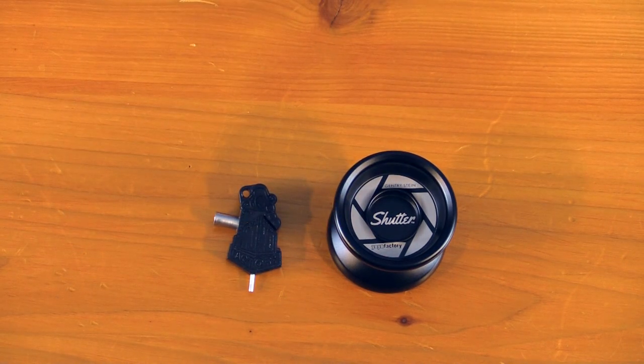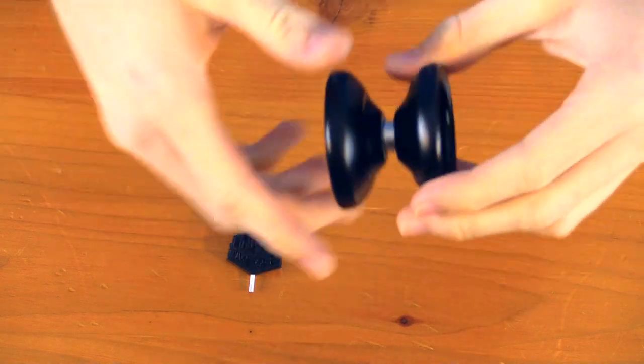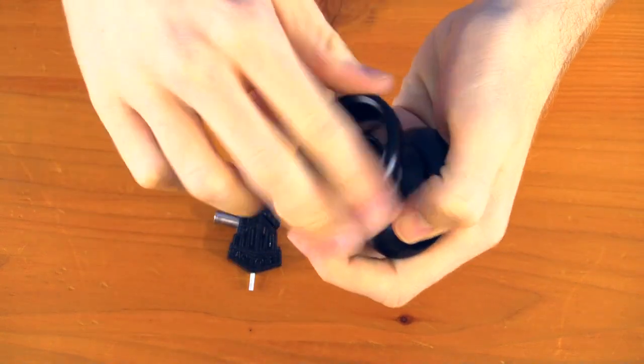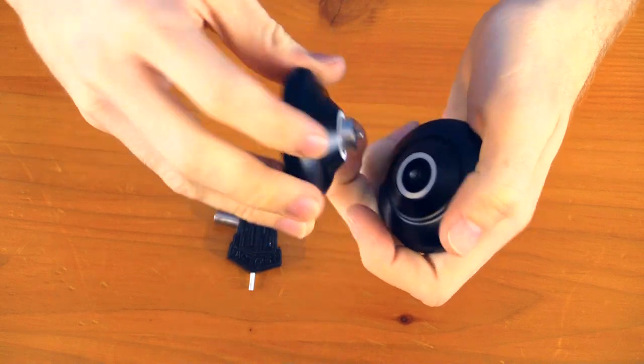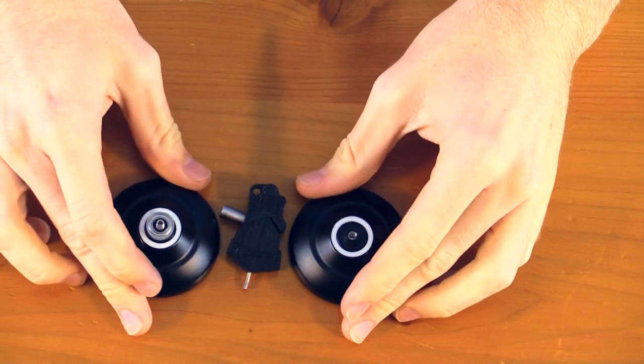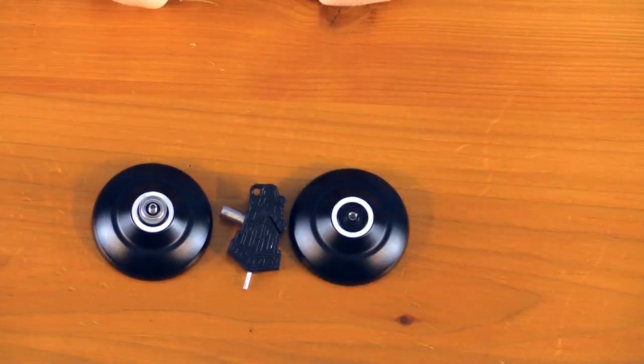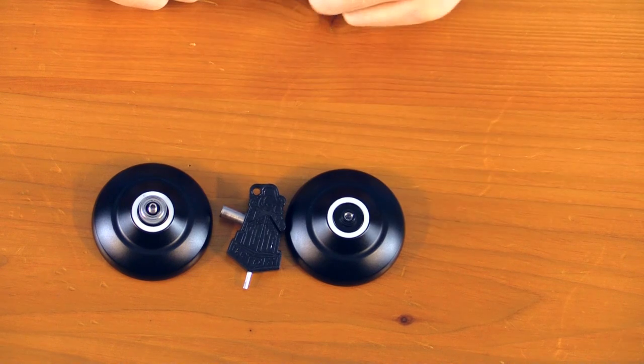Now back to the Shutter. First thing you want to do is unscrew the yoyo, and you'll have one of two scenarios. You'll either have the axle in on the same side as the bearing, like we have here, or the axle will be on the other side, which makes it a lot easier.